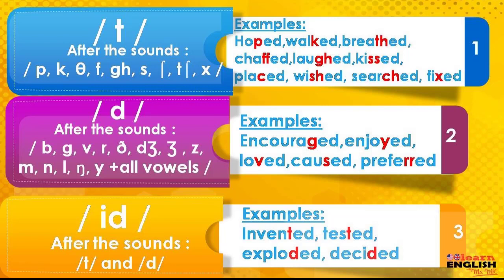Plus all the vowels, diphthongs and triphthongs. We have some examples here: encouraged, enjoyed, loved, caused, preferred. I have a remark here: it's written with /s/, but the pronunciation is /z/, so it's caused.